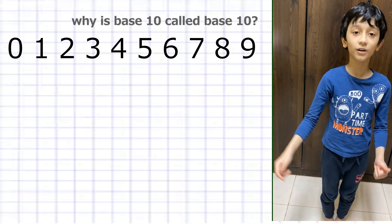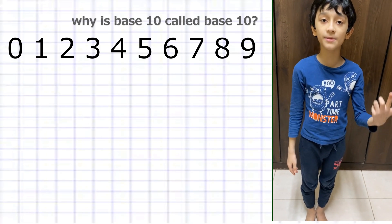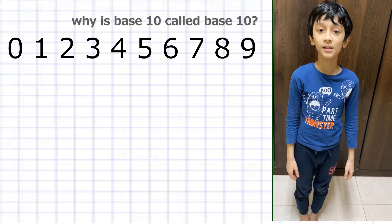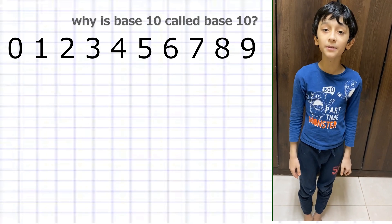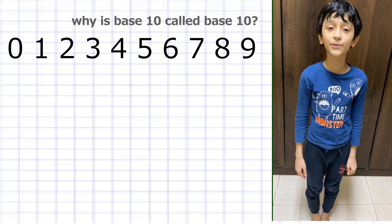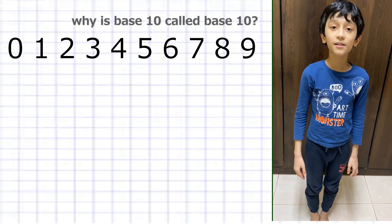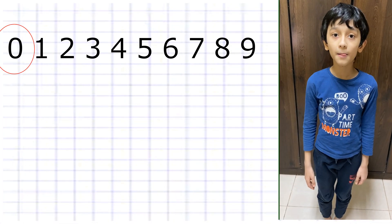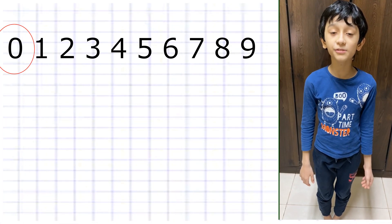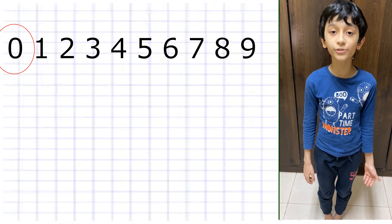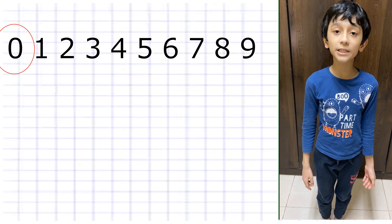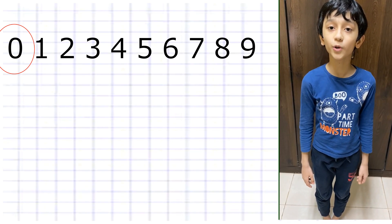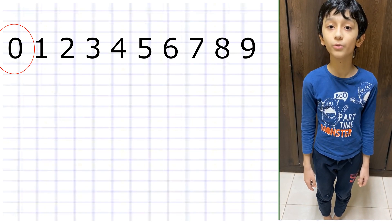...seven, eight, and nine. Many people think that there are nine numbers because they don't count zero. But zero counts in base 10 — you must remember that you should always count zero.